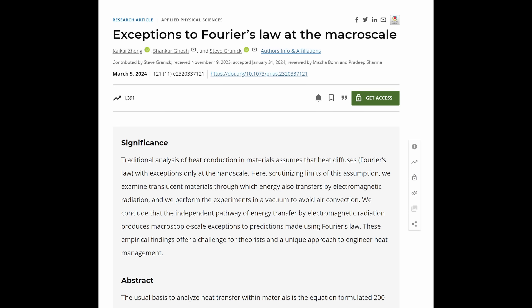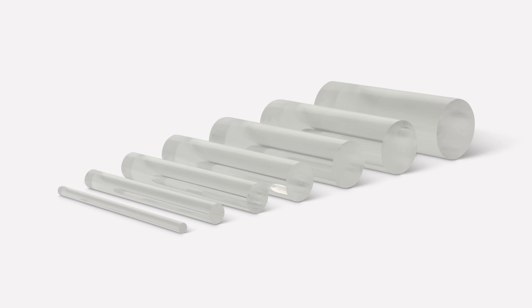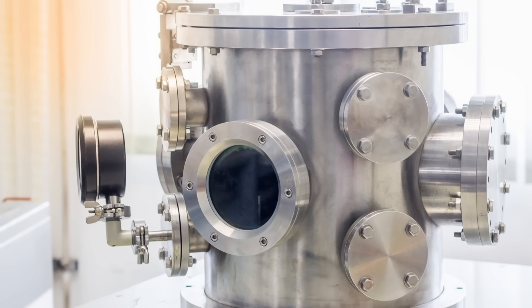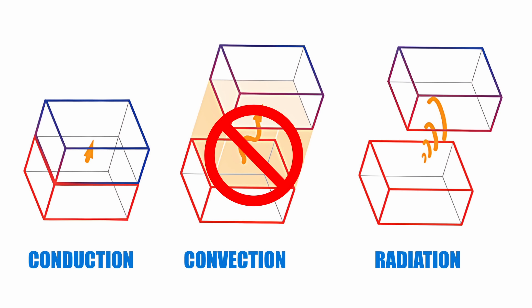The researchers conducted experiments focused on observing heat transfer in translucent materials, specifically translucent polymers and inorganic glasses, under controlled conditions. They set up these materials in a vacuum to eliminate convective heating, ensuring that only conductive and radiative heat transfer mechanisms were significant.